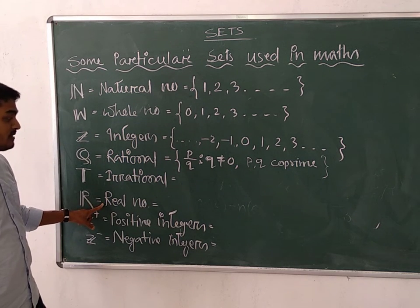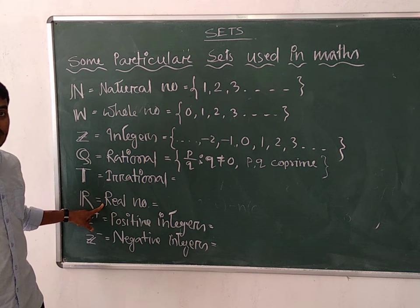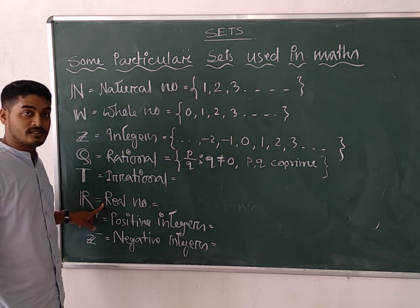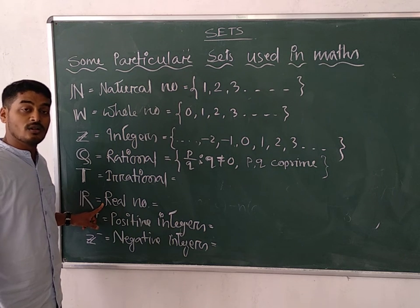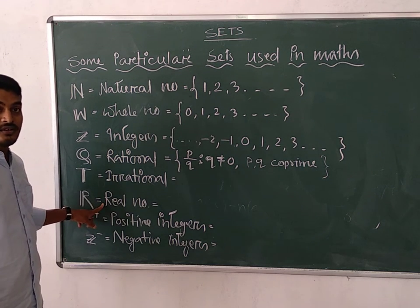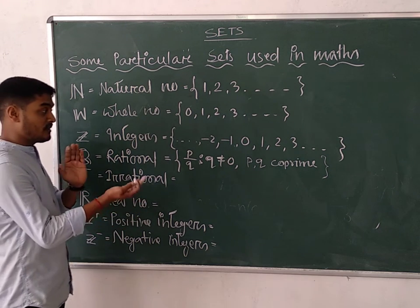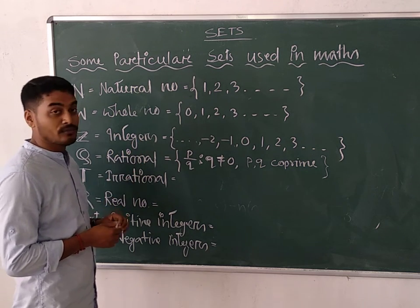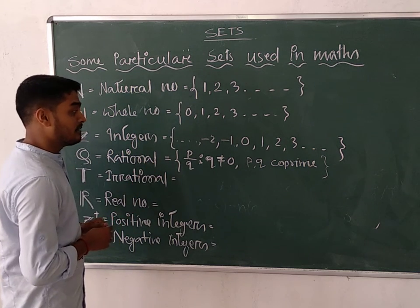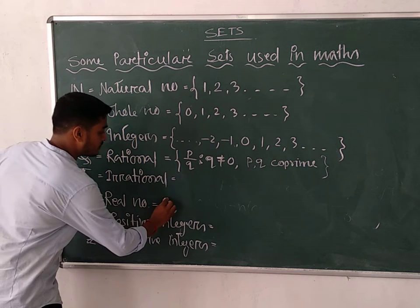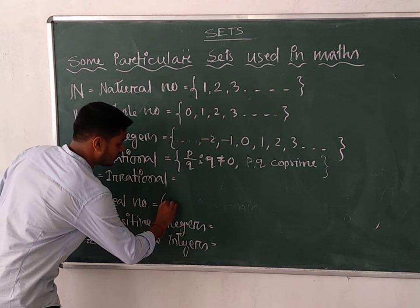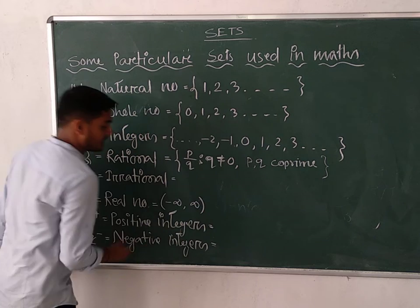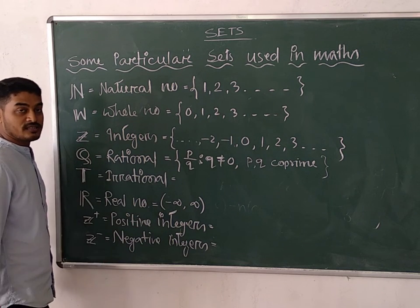Real numbers: all the numbers are known as real numbers, excluding complex numbers. Since we are not yet dealing with complex numbers, you can simply say all the numbers are real numbers. Real numbers cannot be expressed in roster form or tabular method — you cannot list all the elements. That's why real numbers are represented in interval form: minus infinity to plus infinity. This is the representation of the set of real numbers.